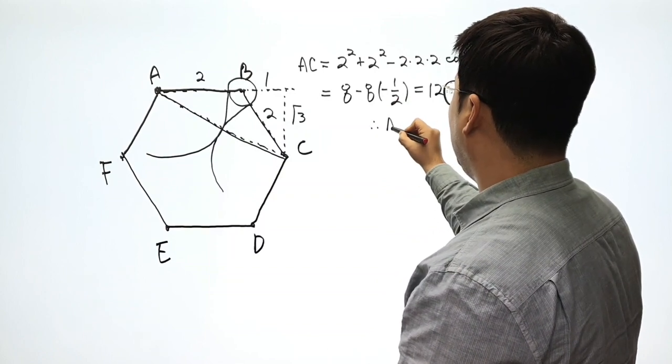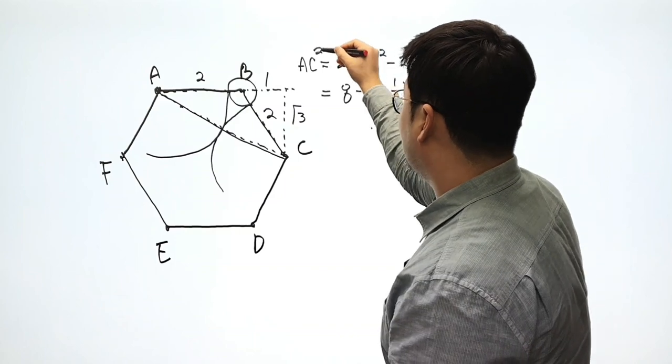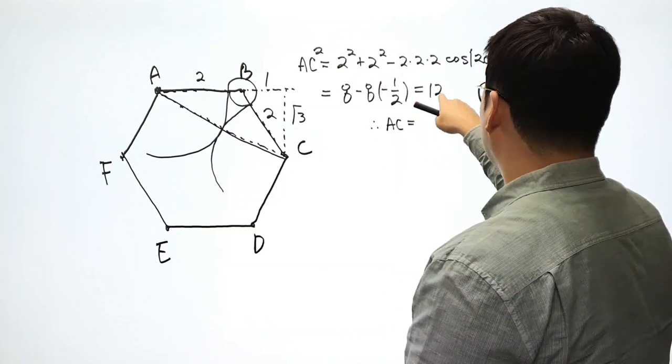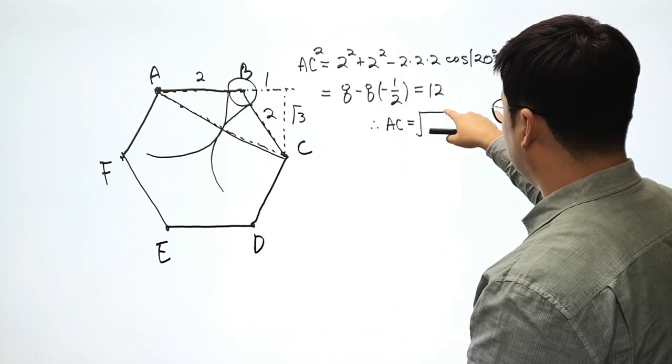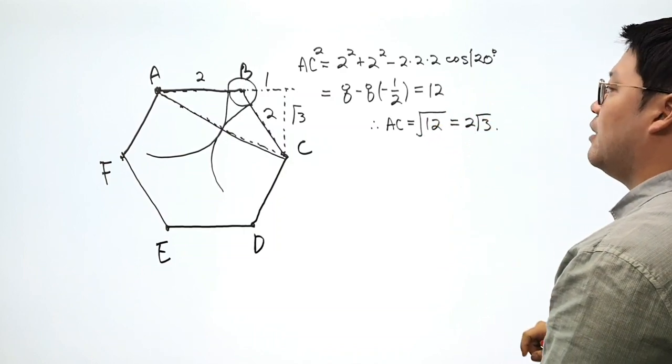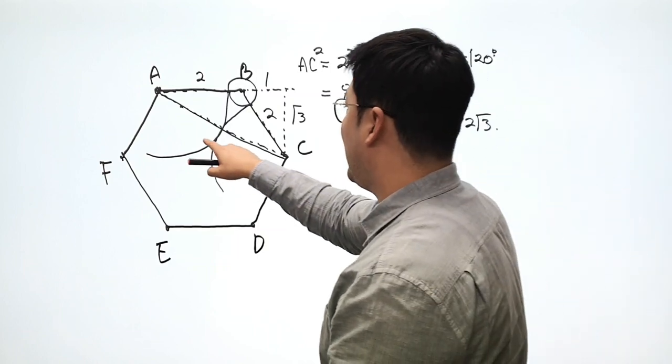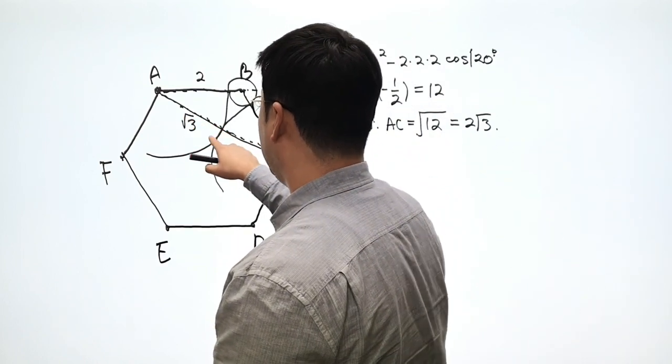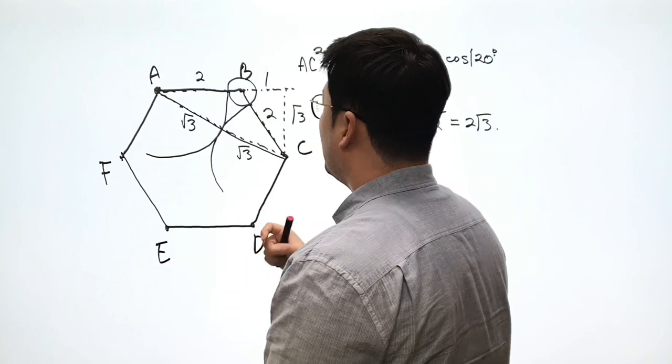So we get AC squared. I totally would have forgotten, but AC is going to be square root of 12. And that becomes two square root of three. Okay. So we have two square root of three. So half of it becomes rad three and rad three.